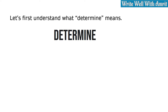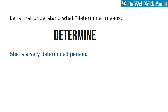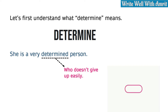Determine has two meanings. You must have often come across a sentence like, 'She is a very determined person.' A determined person is a person who doesn't give up easily — she is clear-headed. If she wants to do something, she does it. This is one widely known meaning of the word determined.